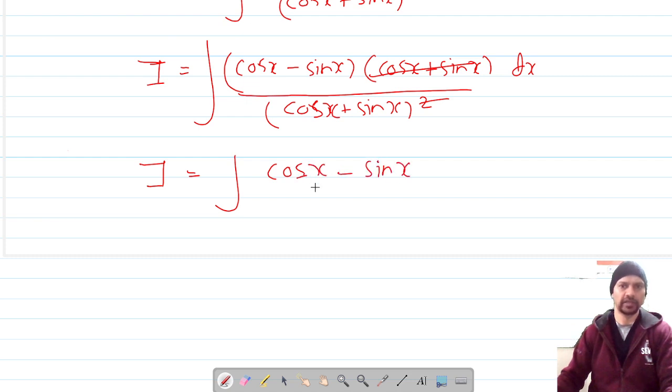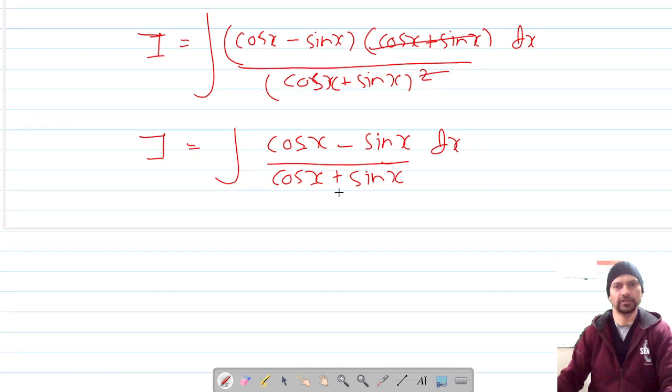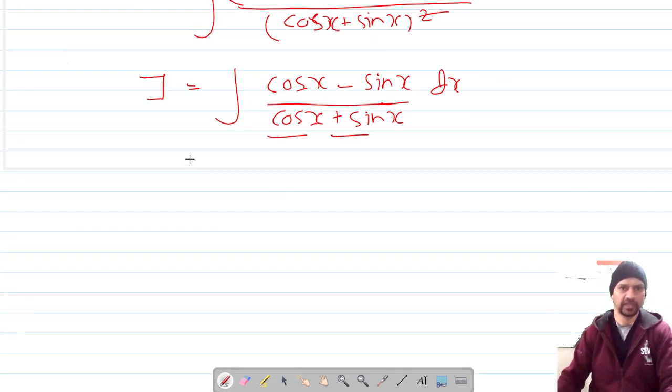Now we are ready for substitution. Let cosx plus sinx equal t. Differentiating this with respect to x gives us negative sinx plus cosx.